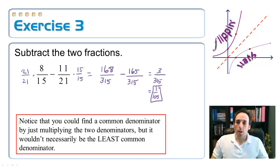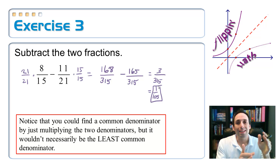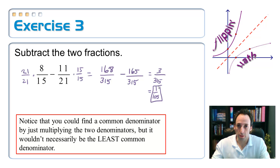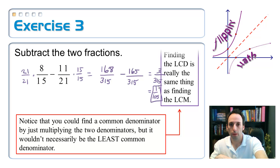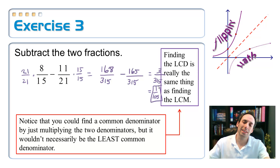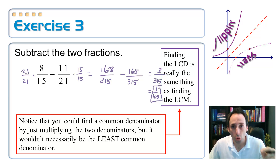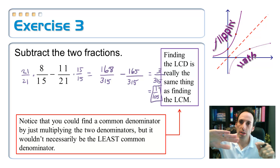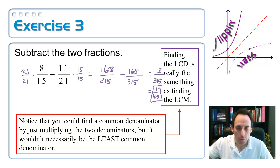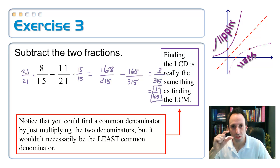So just like we did in the previous one, we could always find a common denominator by multiplying the two denominators together, but it may not be the least common denominator. Finding the least common denominator is the same thing as finding the least common multiple. A least common multiple means you start with one number and keep taking multiples of it until both numbers divide into it evenly — and we want the smallest one possible.